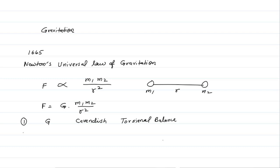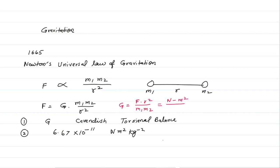The value of G is 6.67 times 10 to the power of minus 11, and the unit is Newton meter squared kg to the power of minus 2. It is easy to figure out: G equals F times r squared divided by m1 times m2, so force is in Newtons, distance in meters squared, and mass in kilograms squared. This is the unit in the SI system.